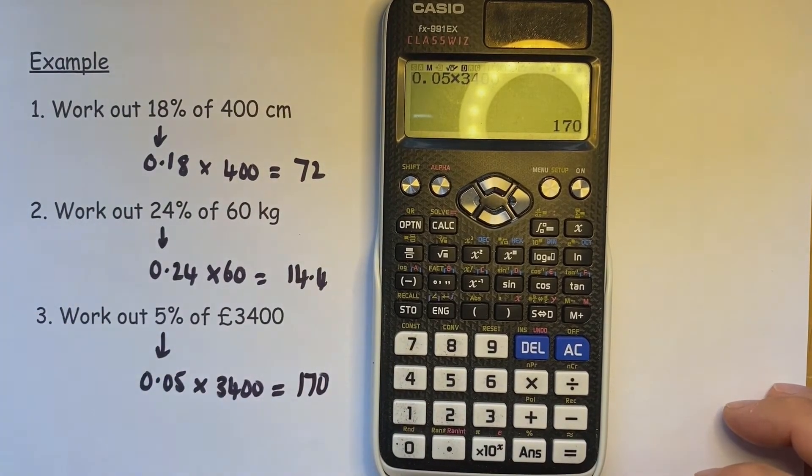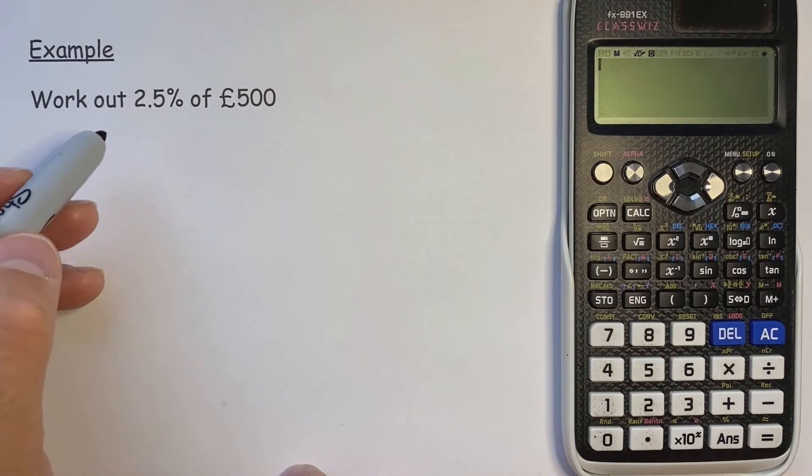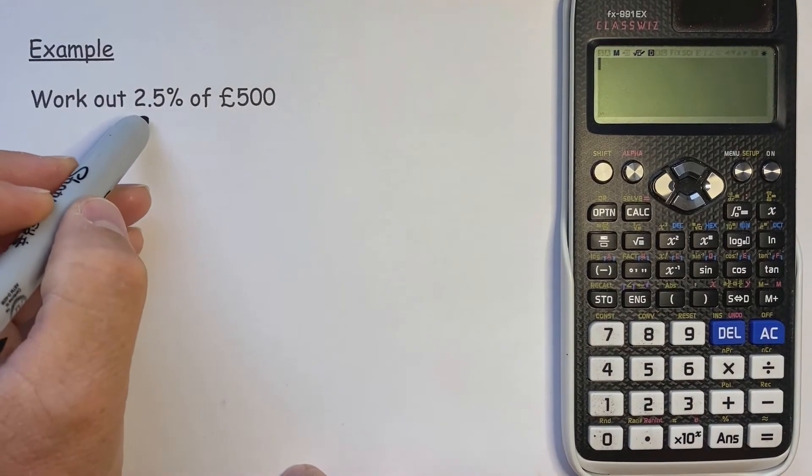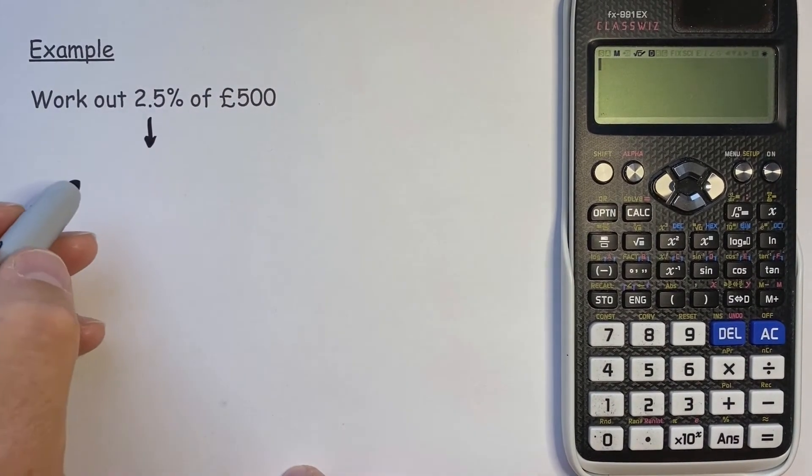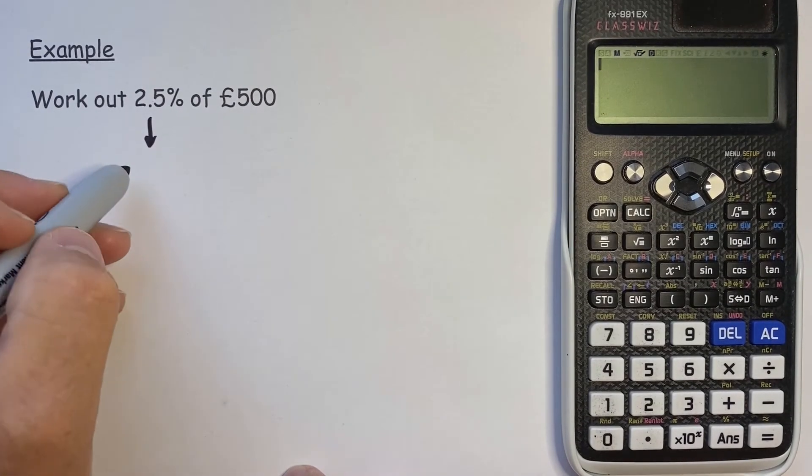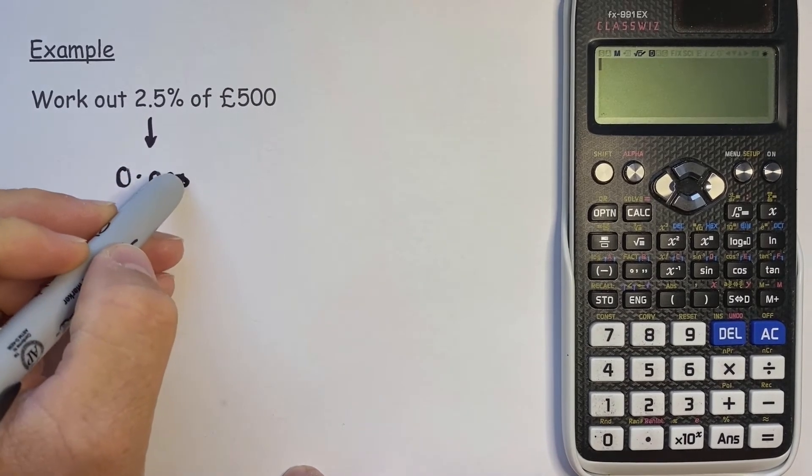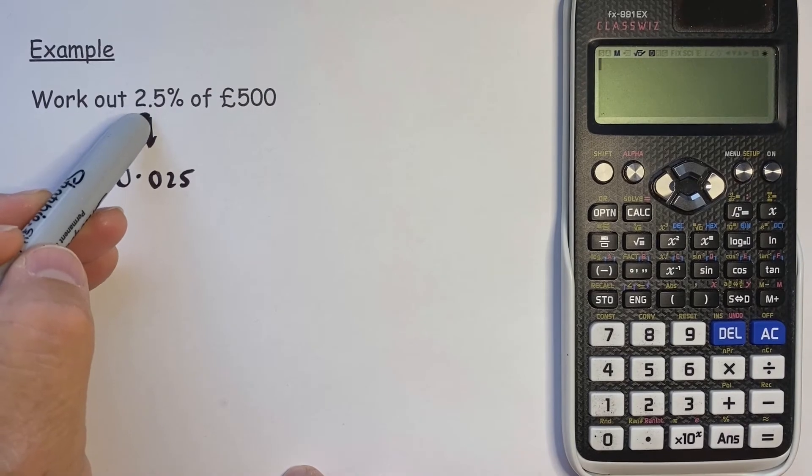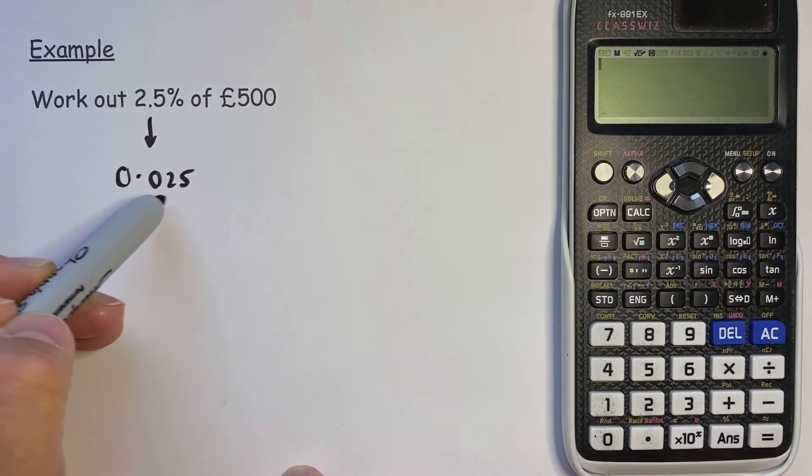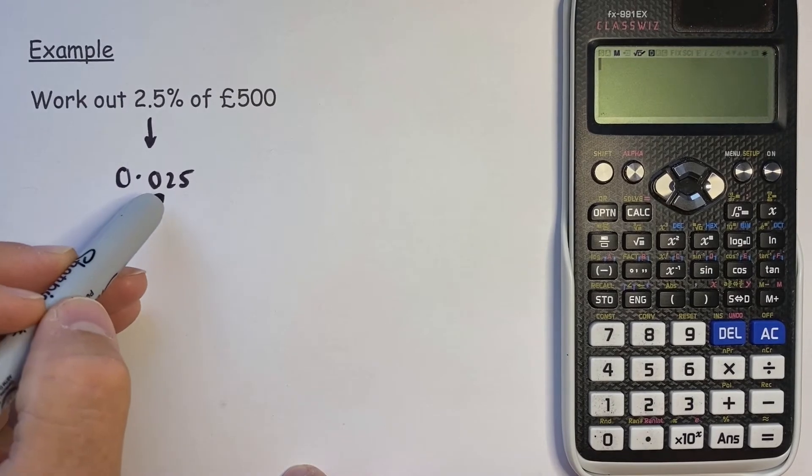Be careful with 2.5%. Now when a percentage is given as a decimal, this is where often people go wrong. To change that into a decimal rather than a percentage, we divide by 100. So that can be written as 0.025, because the decimal point moves once, twice over.